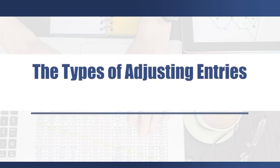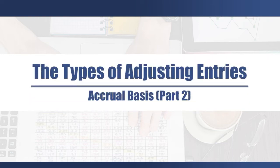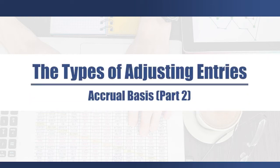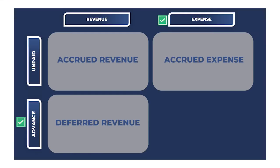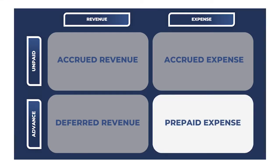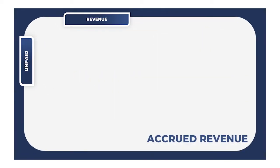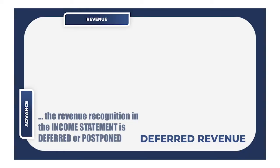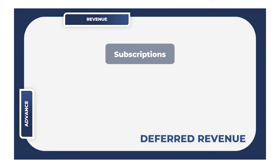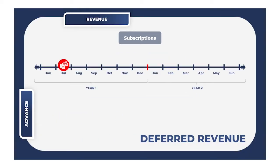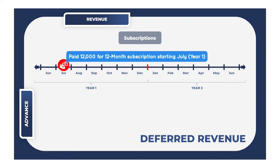In this video we will examine the practical applications of the accrual basis of accounting and how it affects both the balance sheet and the income statement. We will learn about the four main categories of the adjusting entries under the accrual basis and how best to visualize them, so that no matter what accounting problem is presented to you, you will be able to interpret them correctly.